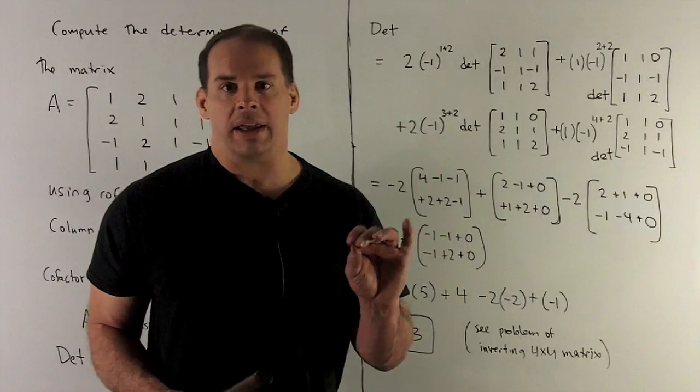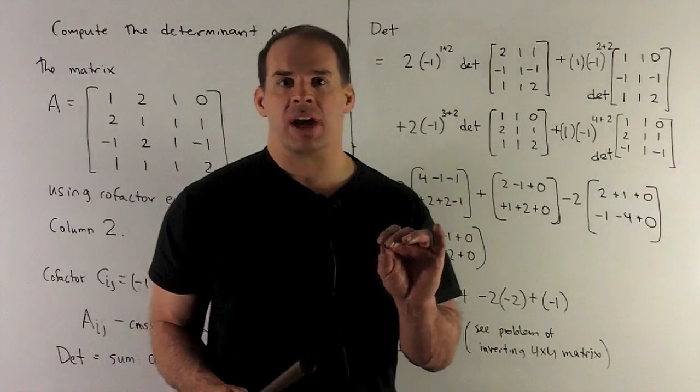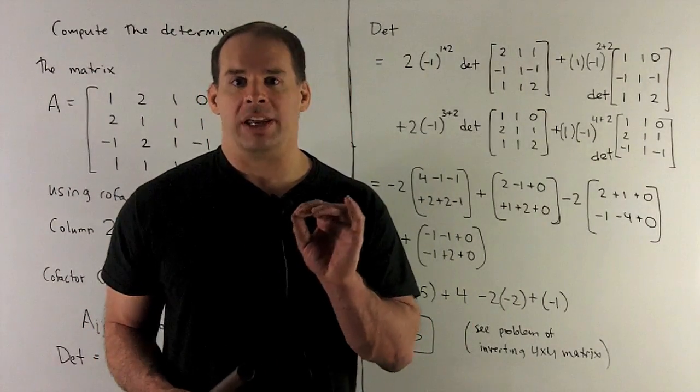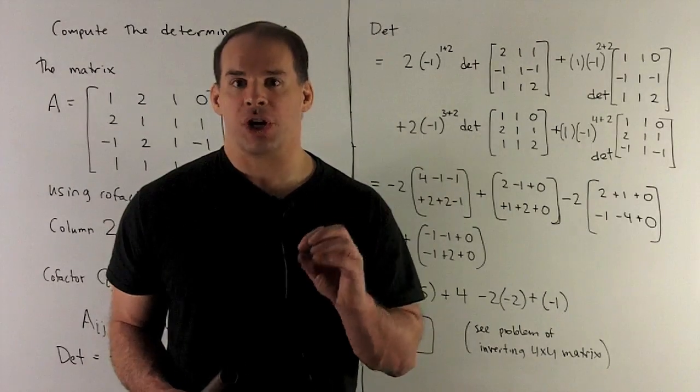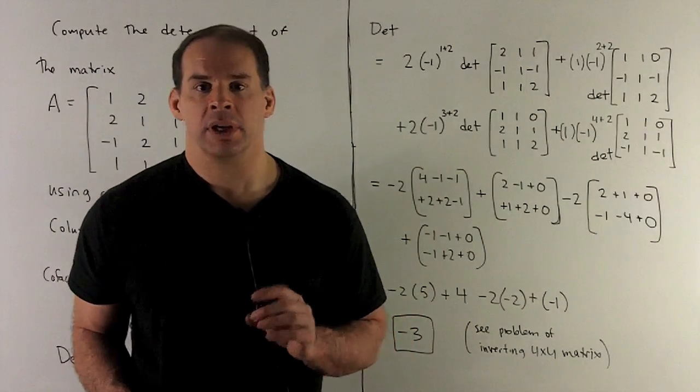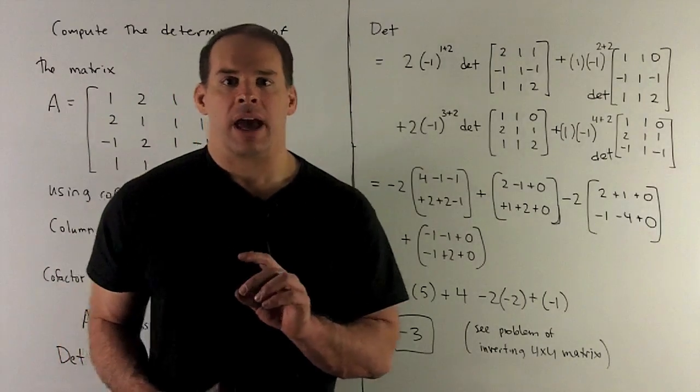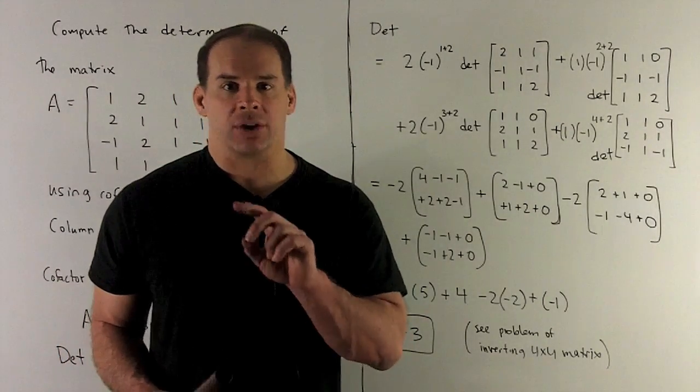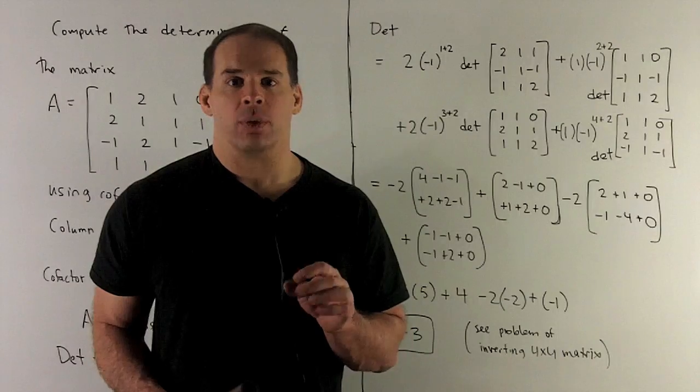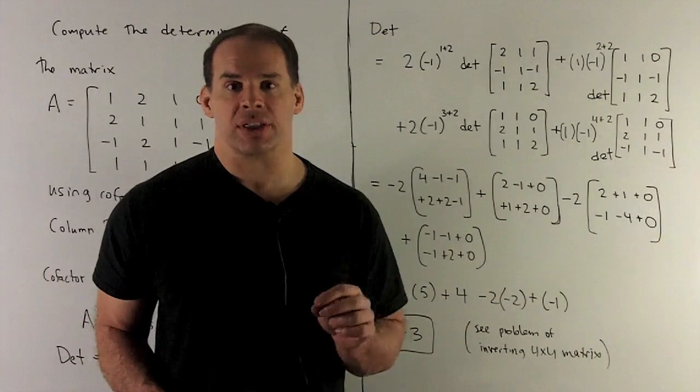Now, where we're at here is, all the bookkeeping's done. Now, it's just a matter of computing our 3 by 3 determinants. And then, just crunching the numbers down. So, for a 3 by 3, we have our diagonal trick. I can get my determinant by multiplying down 3 diagonals to the right, subtract off when I multiply down 3 diagonals to the left.